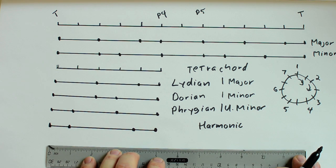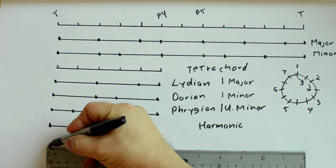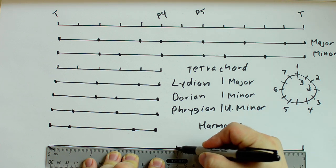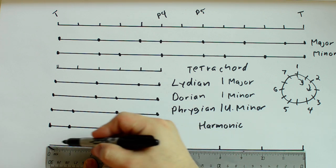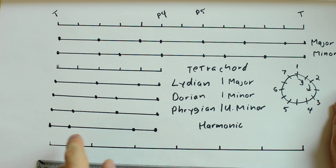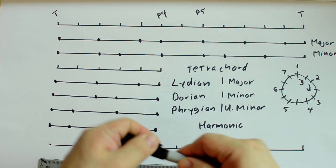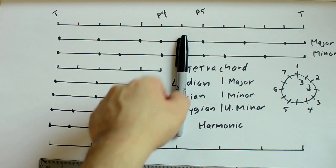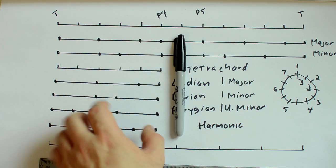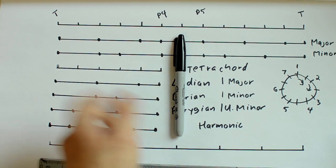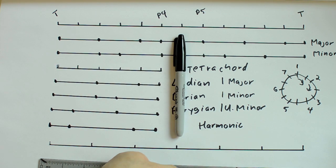Now we need one more tool before we can build the natural modes from these basic building blocks, and that is the whole tone scale. The whole tone scale is, as you can imagine, a scale made up of whole tones only — no half steps. So it's whole, whole, whole, whole, whole, whole. The reason we need this is because we don't have the note between the 4th and the 5th, called the Tritone. It's dissonant and wasn't really used in ancient music a lot, but it's used considerably in later and modern music and has a very important role. So by adding this whole tone scale, we can get this note.